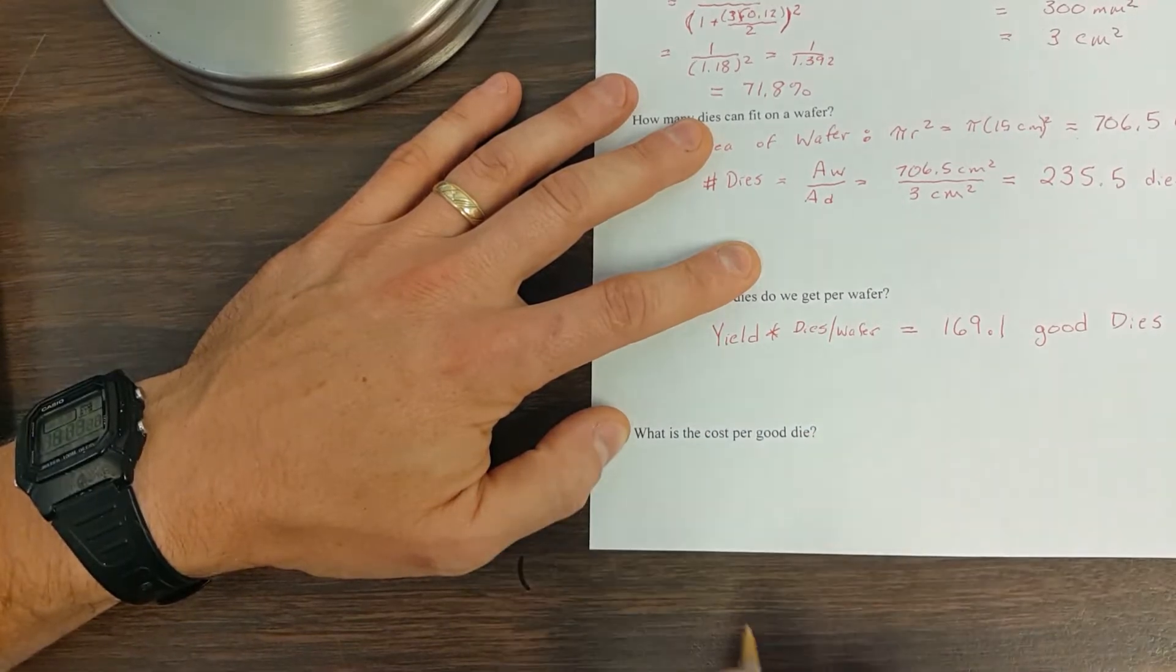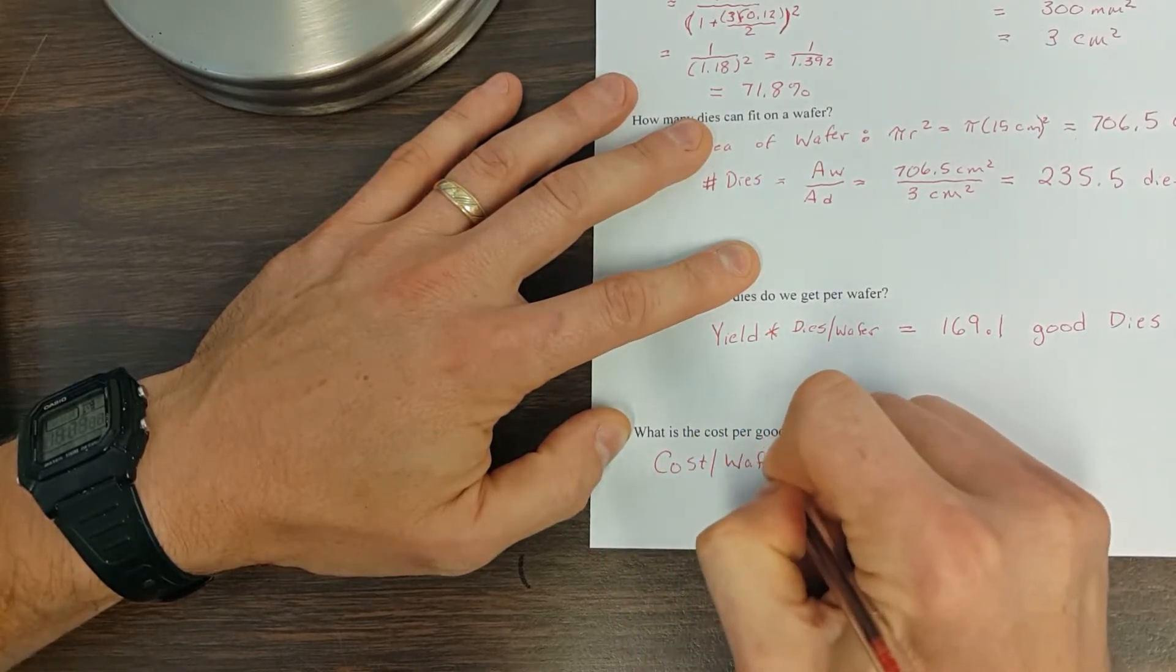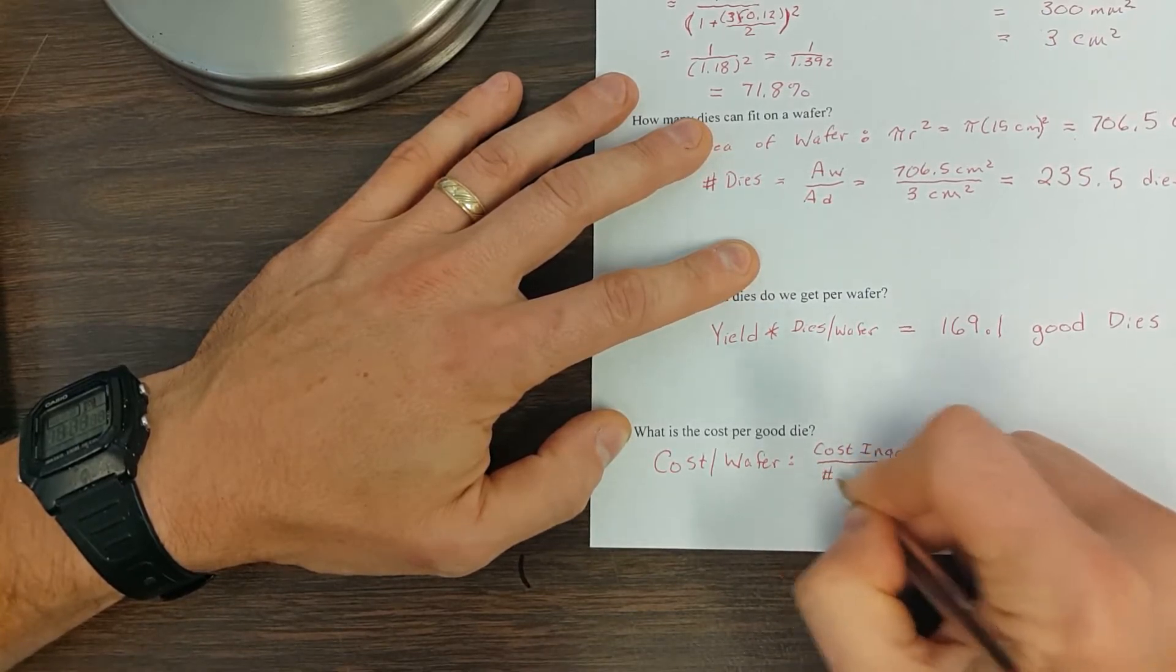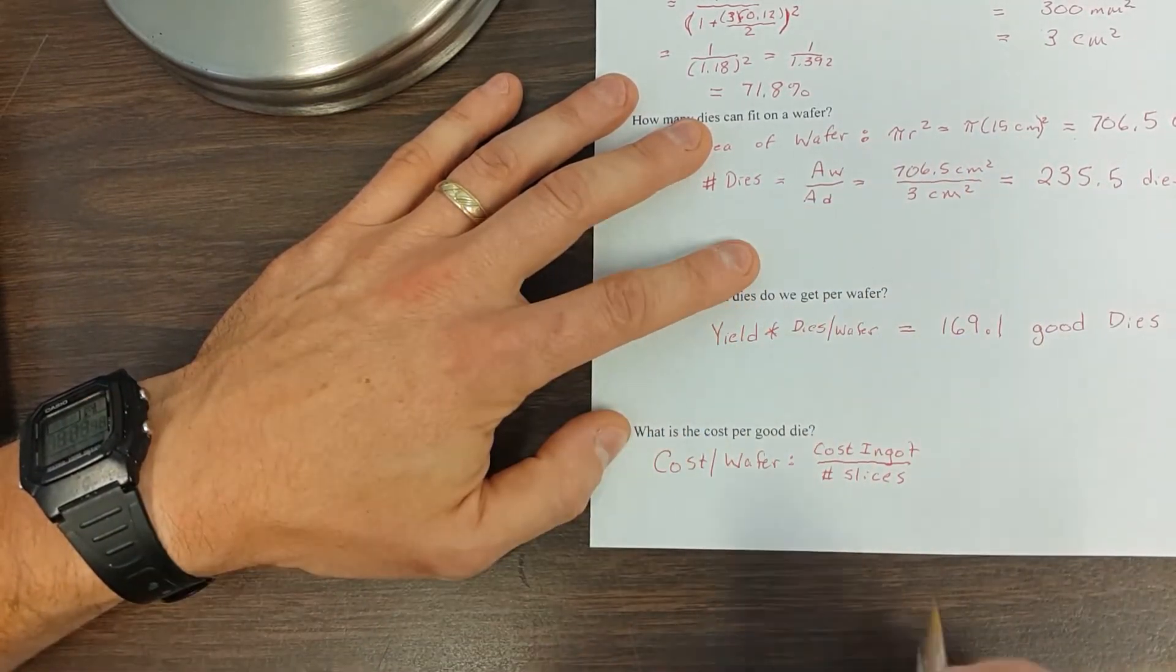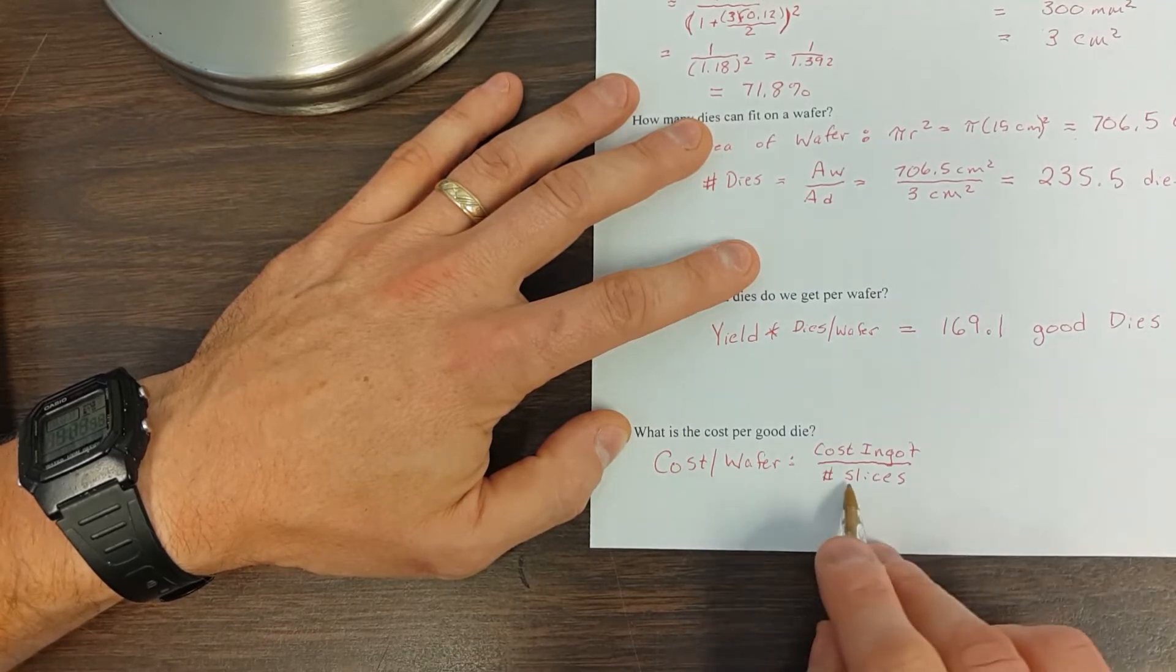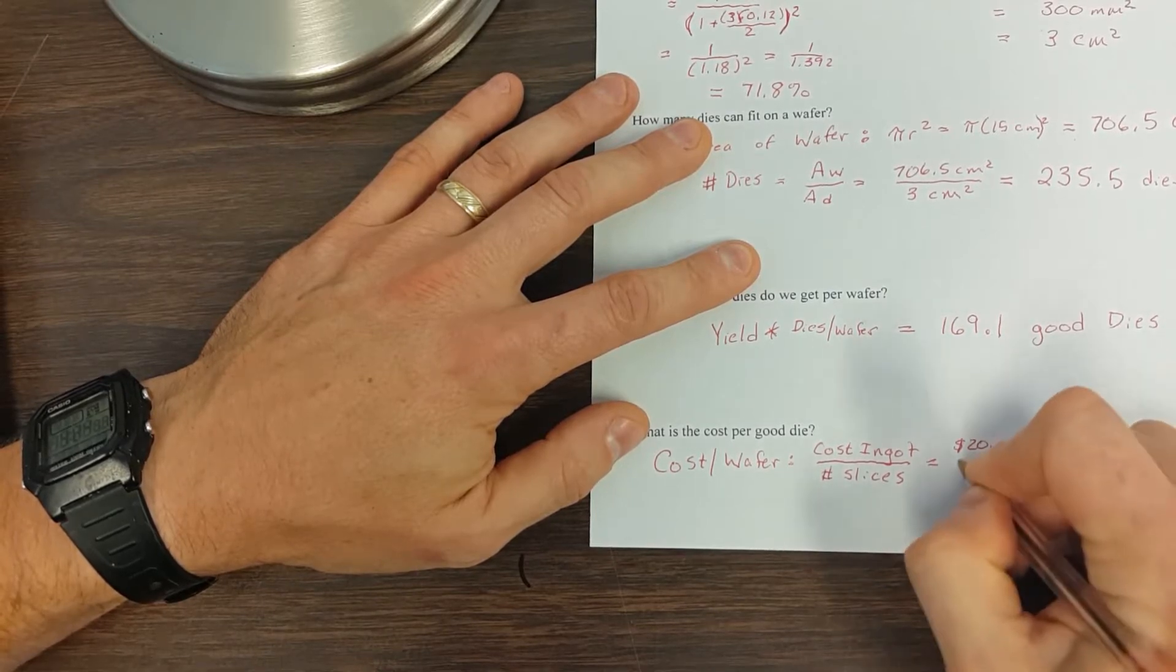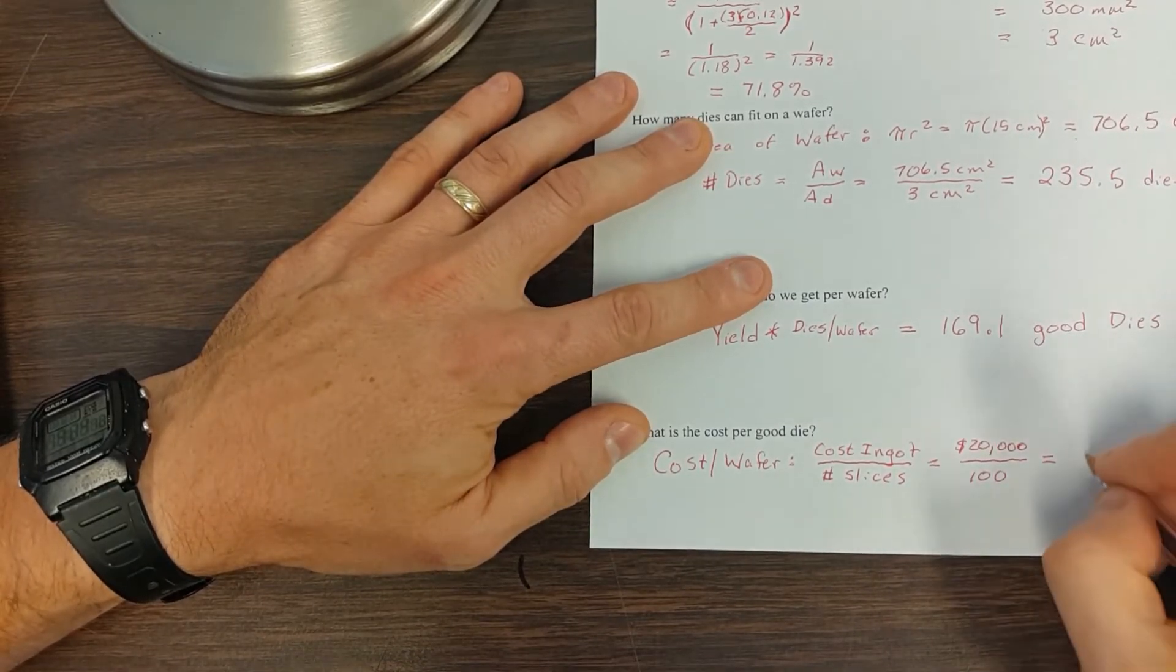So remember that the cost of the wafer is going to be the cost of the ingot divided by the number, and I'm going to call this the number of slices, because remember it's a big old tube, and we slice it into wafers. Well in this case, in the original given part of the problem, we saw that there was a hundred of them. And how much did the ingot cost? It cost $20,000. And then how many do we get? We get a hundred wafers. So that's going to be $200 per wafer.